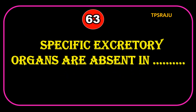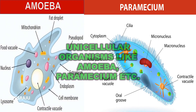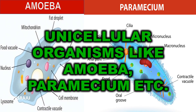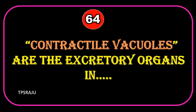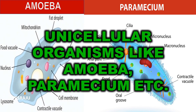Specific excretory organs are absent in unicellular organisms like Amoeba, Paramecium, etc. Contractile vacuoles are the excretory organs in unicellular organisms like Amoeba, Paramecium, etc.